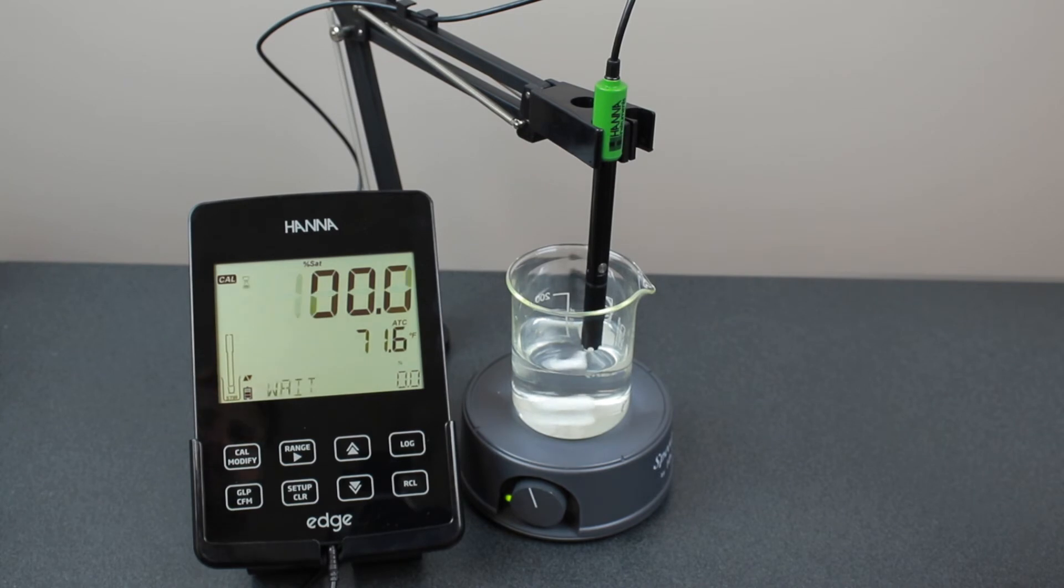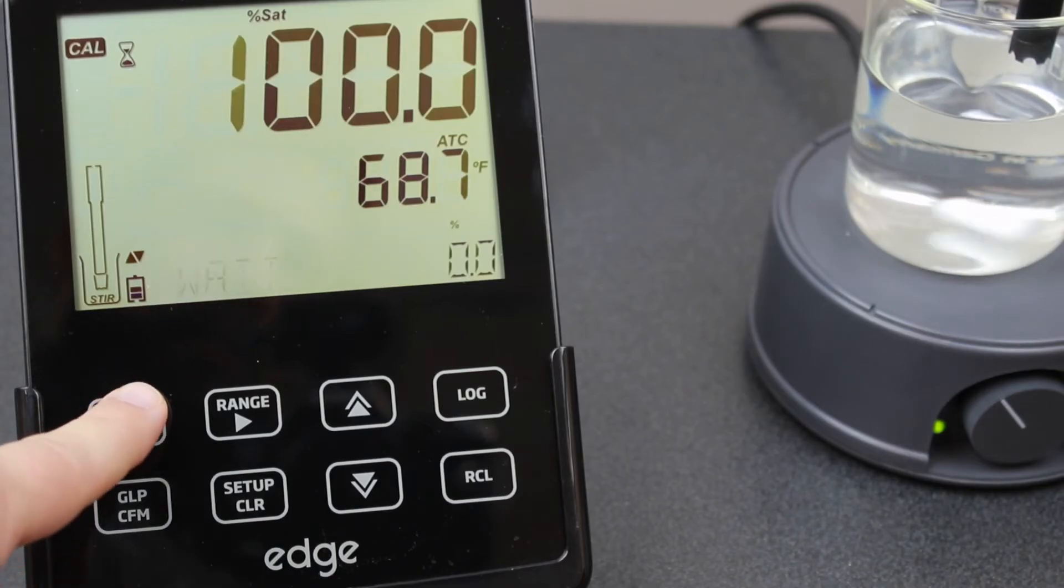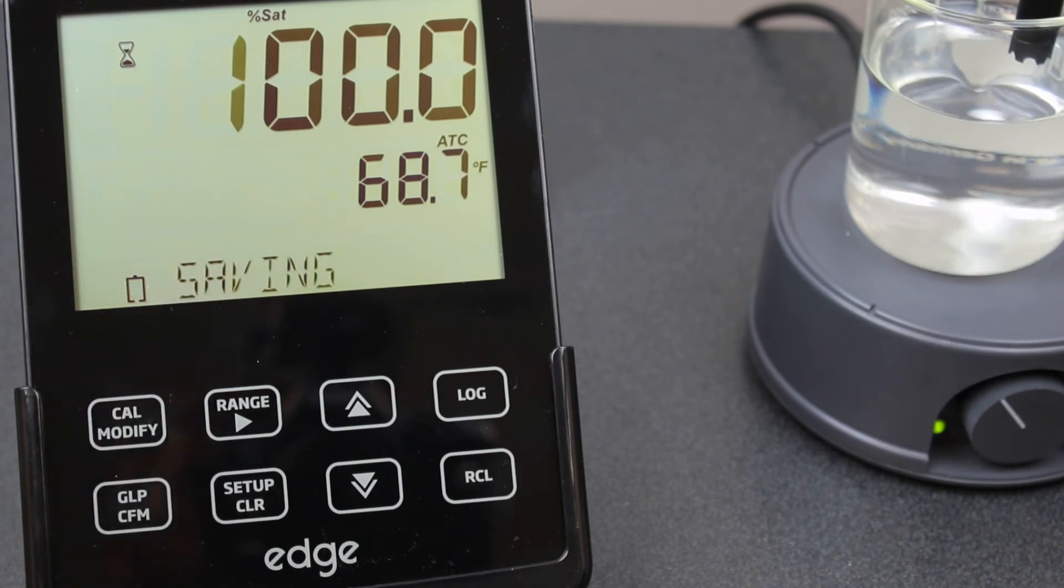The meter will display 'wait' and 0.0% will be displayed in the lower right corner. Press CAL to calibrate to one point and exit calibration. To continue with a 0% dissolved oxygen calibration...